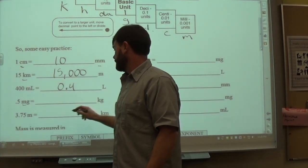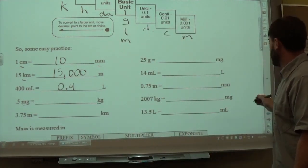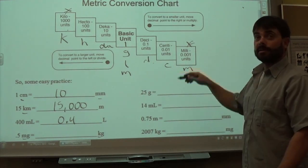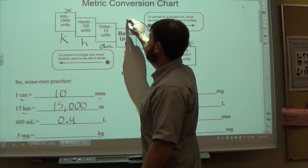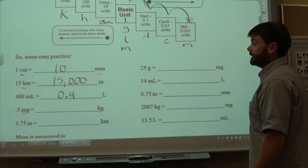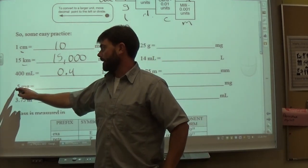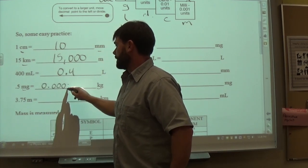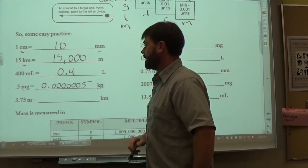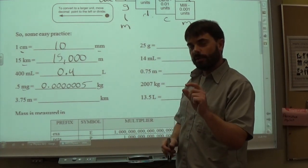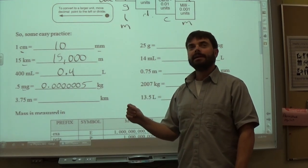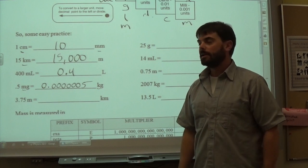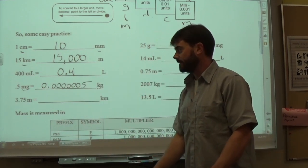Then we go from 0.5 milligrams to kilograms. Milli is at the very bottom and kilo is at the top — that's 6 steps to the left, which means dividing. The decimal starts in front of the 5, so you move it back 6 places, leaving 6 filler zeros after the decimal. This makes sense: a milligram is very small, like a grain of salt, and a kilogram is about 2.2 pounds, so you have a very small fraction of a kilogram.